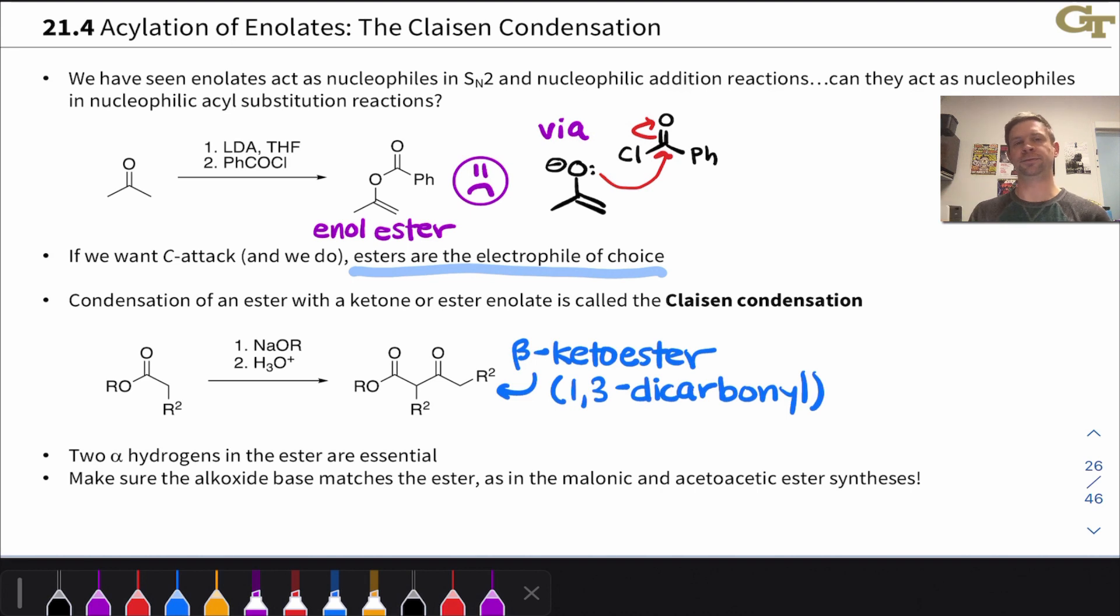Let's remind ourselves of a couple important points about this reaction. The first is that two alpha hydrogens in the ester are essential. If there was another R group here, this reaction wouldn't work, and we'll see why when we dig into the mechanism on the next slide.